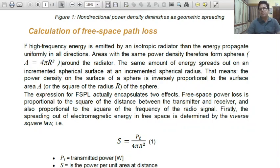The same amount of energy spreads out on an incremented spherical surface at an incremented spherical radius. Incremented spherical surface, incremented spherical radius. That means the power density on the surface of a sphere is inversely proportional to the surface area, is inversely proportional to the surface area A or the square of the radius R of the sphere.